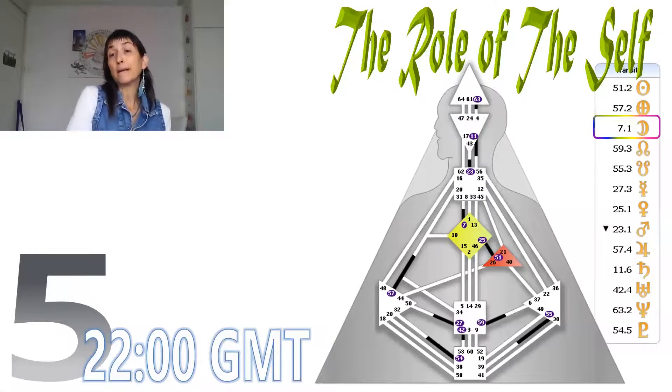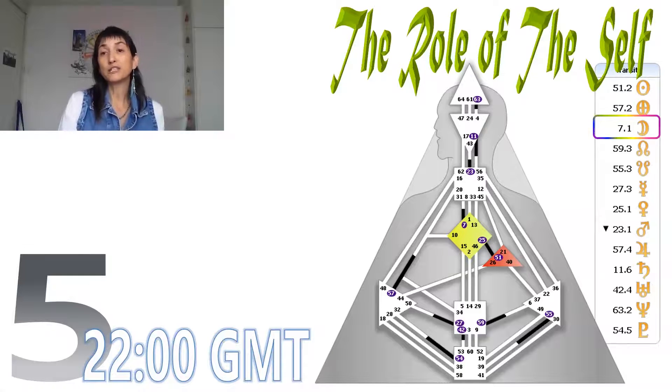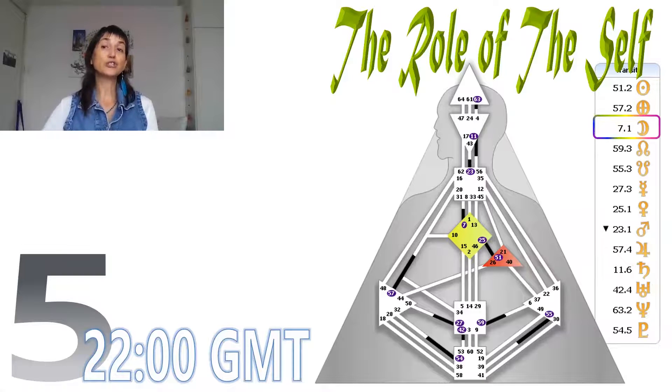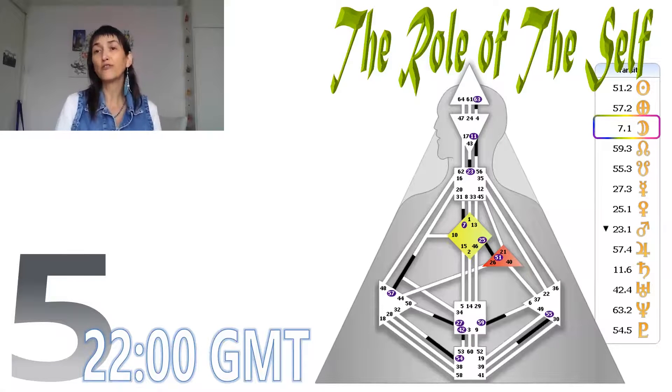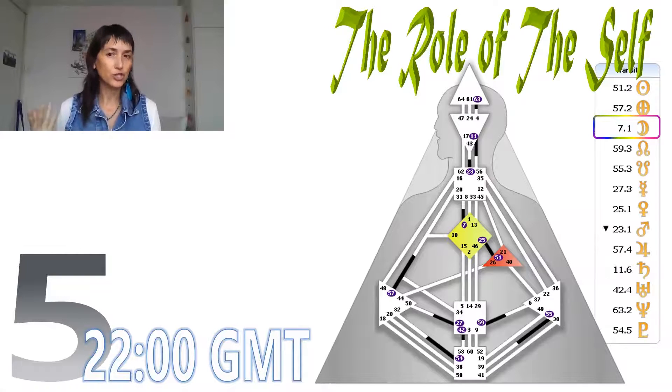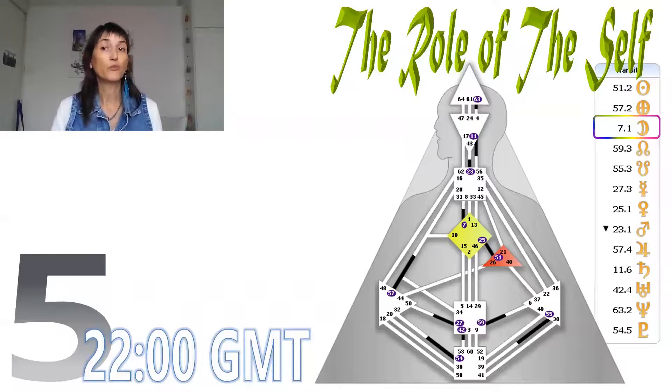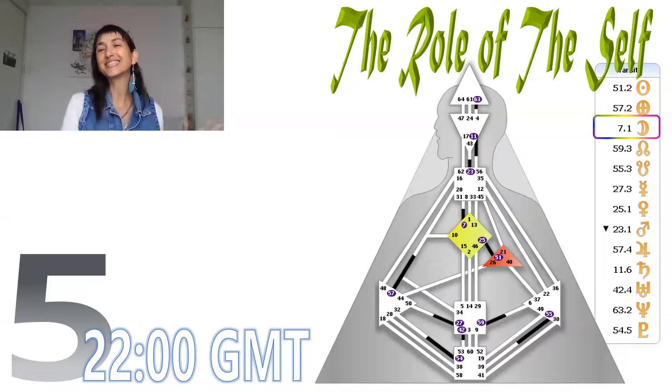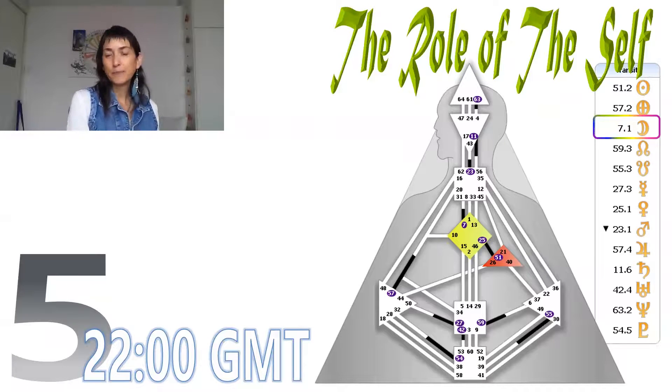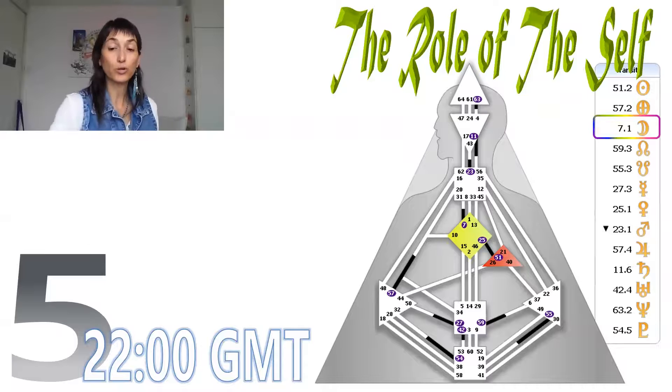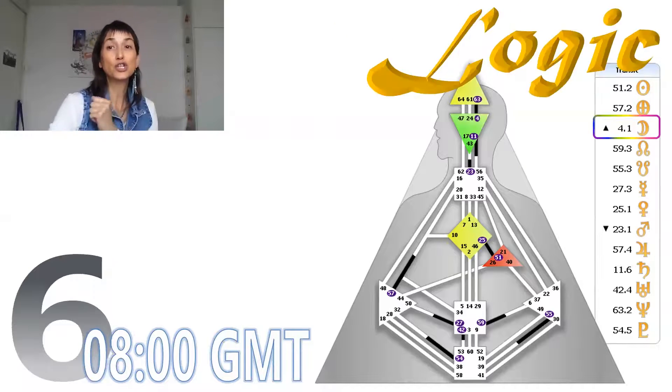In the fifth, 22:00 GMT, we are going to experience the six variations of the role of the self while the moon is going to be in the seventh gate. And because of this channel of initiation as a global conditioning pattern, the G center is lightened up. So we are going to have all the six roles, one after the other. And those of us who are sensitive will be able to feel its changes and shifts.